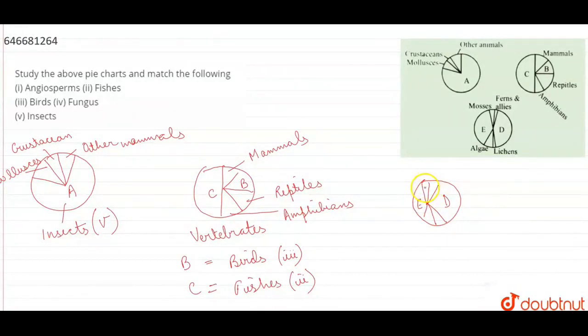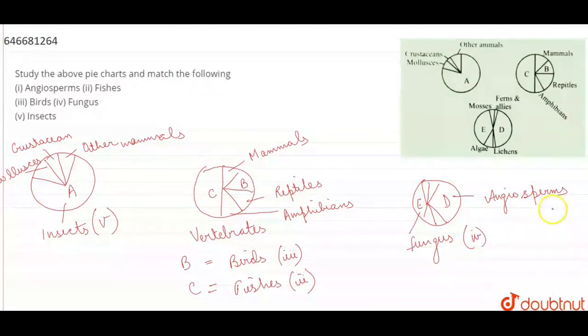The following pie shows mosses, ferns and allies, algae and lichens. Whereas D shows angiosperms and E shows fungus. That is option 4 and option 1 respectively.